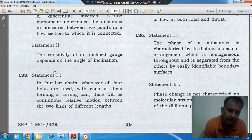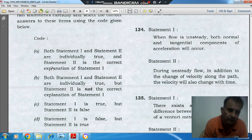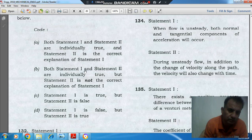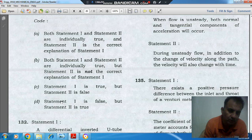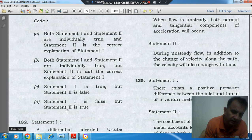Options are: Option A - both statement 1 and statement 2 are individually true and statement 2 is the correct explanation of statement 1. Option B - both statements are individually true but statement 2 is not the correct explanation of statement 1. Option C - statement 1 is true but statement 2 is false. Option D - statement 1 is false but statement 2 is true.